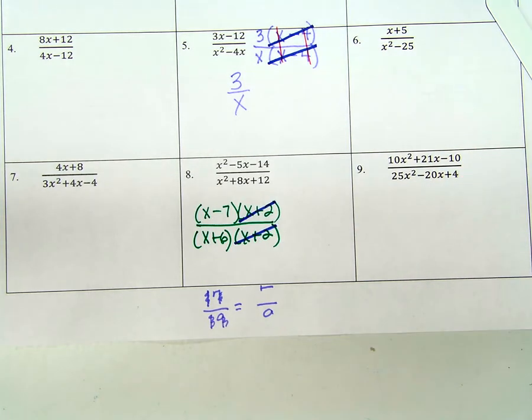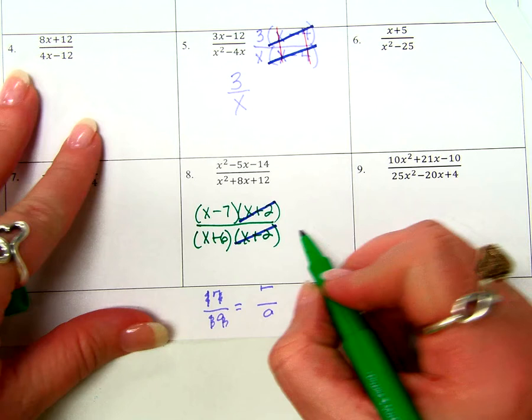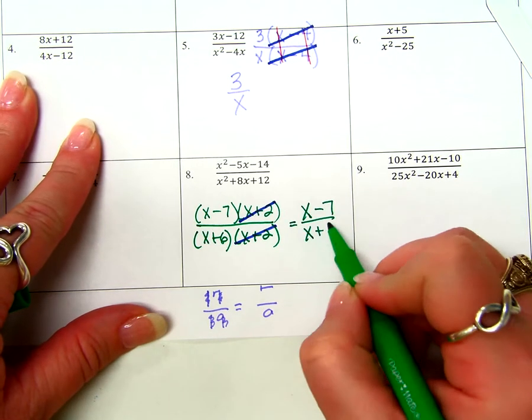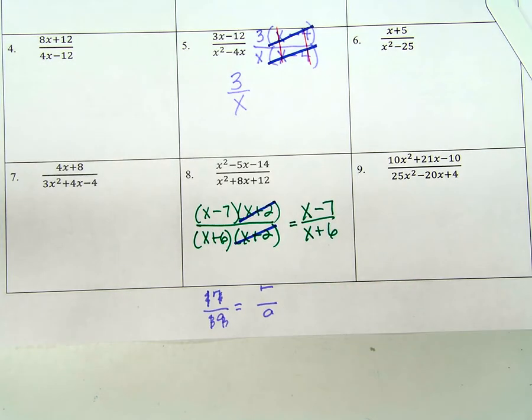I have to factor it. It's a trinomial with a leading coefficient of 1. So what multiplies to be negative 14 and adds to be negative 5? Negative 7 and positive 2. X minus 7, X plus 2. Now, let's look at the denominator. To trinomial with the leading coefficient of 1, what multiplies to be 12 and adds to be 8? 6 and 2. X plus 6, X plus 2.